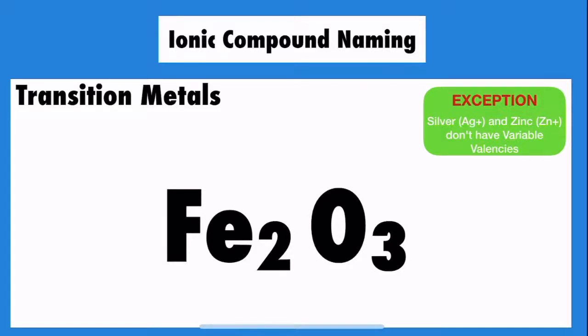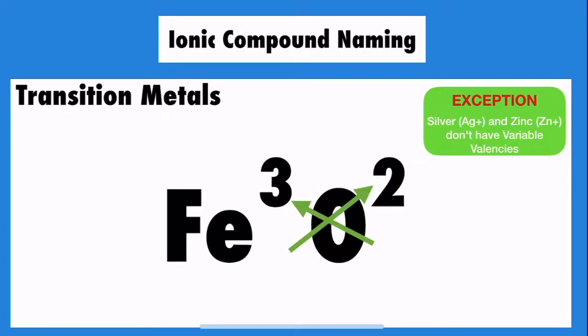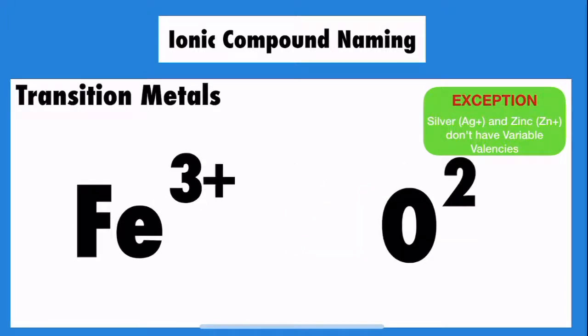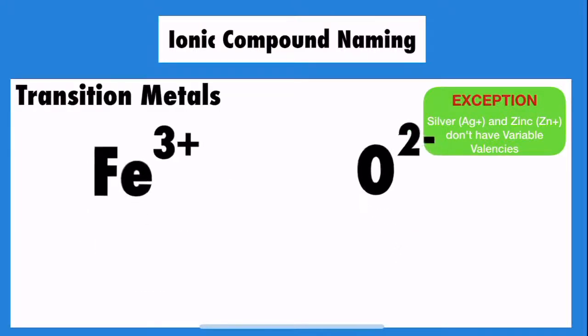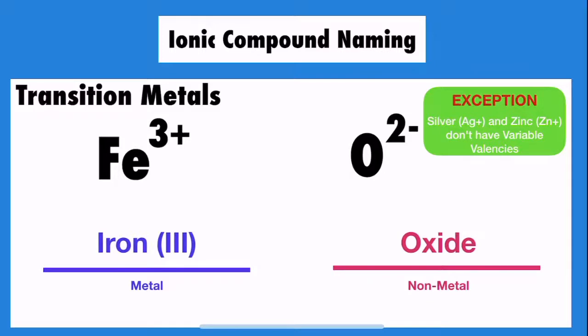So how do you find the transition metal's charge? Well, you just cross the amount of the element up to the top of the other element for both of them, and that's it. Then, you just write iron, specifying that it's 3+, the version of 3+, and write oxygen, taking off the end and replacing it with ide.